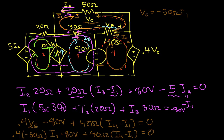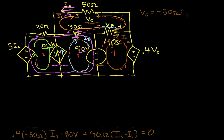Well, I can, let's clear off some stuff here. And we can rearrange things a little bit, tidy them up, and get, let's see, I1 times 40 minus 0.4 times negative 50 would be 20, plus 40 I4. And this is equal to 80 volts.